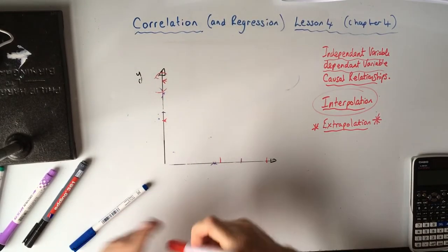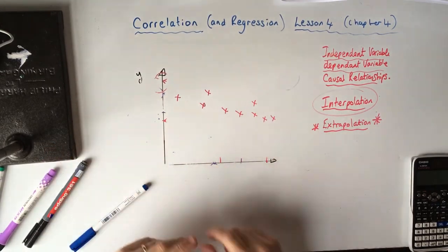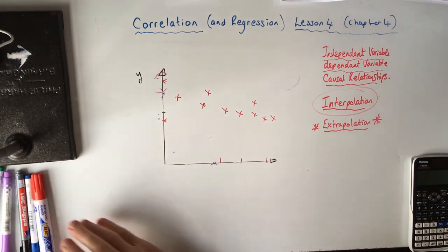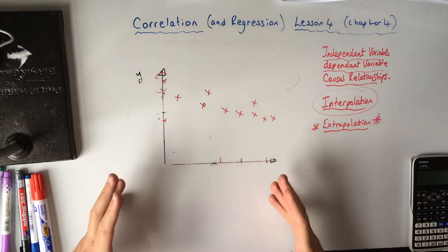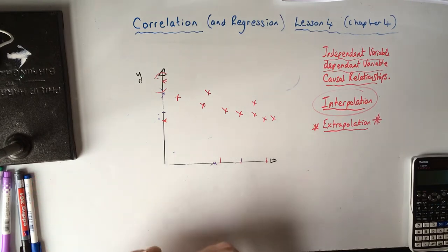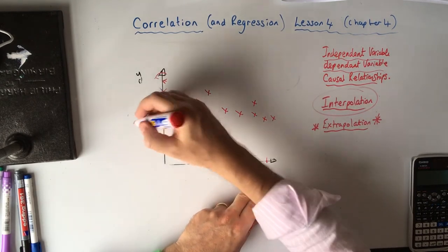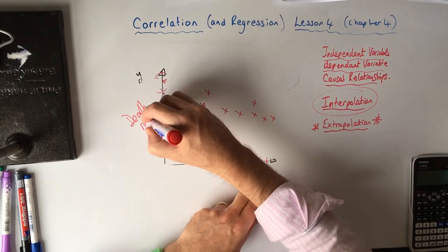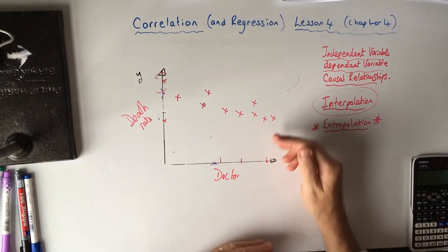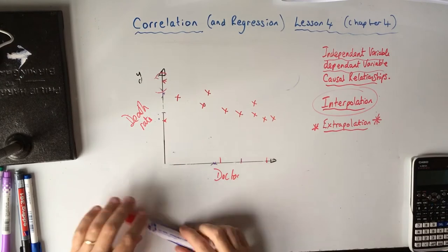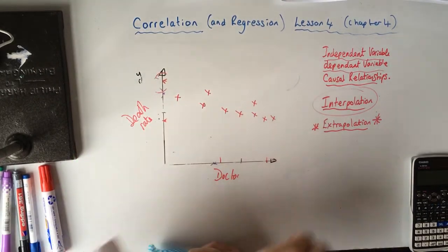Negative correlations are harder to find. I once saw on a GCSE paper a morbid one — death rates and number of doctors per kilometre square on a continent. The higher the number of doctors, the lower the death rate; the fewer doctors, the higher the death rate. That's a good example of negative correlation.